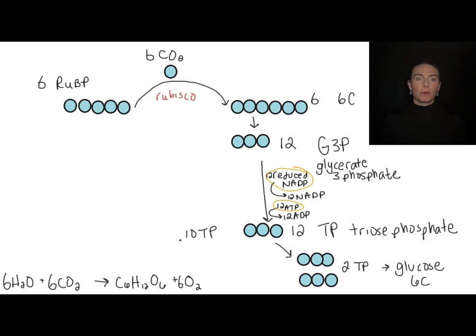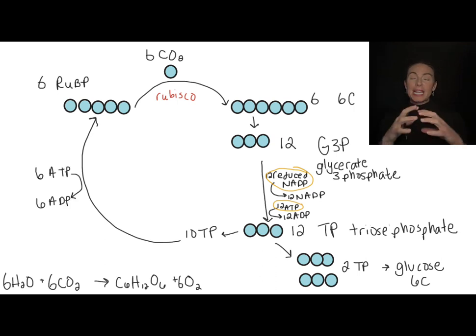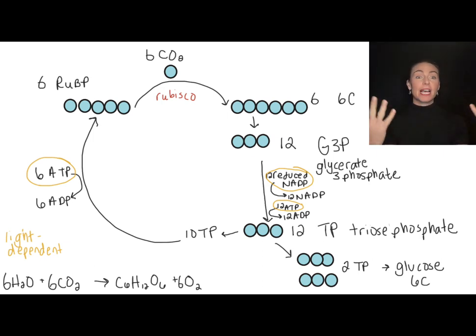That means I have ten of these TPs left to continue this cycle. So the ten TPs that are remaining are going to be used to regenerate RuBP. But because I have to break bonds and then make bonds and then rearrange all of these carbons, I need to spend some energy and that's going to come from the form of ATP. So just like I used energy carrying compounds to reduce the G3Ps, I'm also going to need to spend a little bit of energy to regenerate the RuBPs. And again, these energy containing compounds, the ATP and the reduced NADP, are what we had from the light dependent reactions.